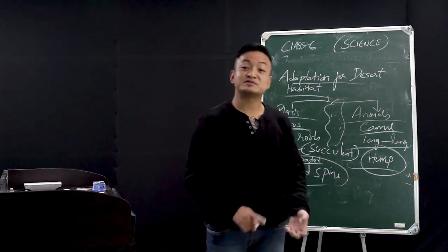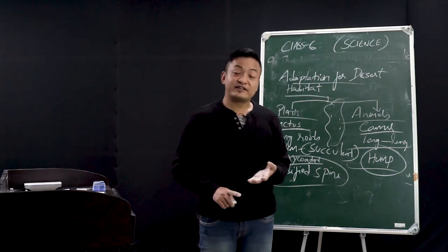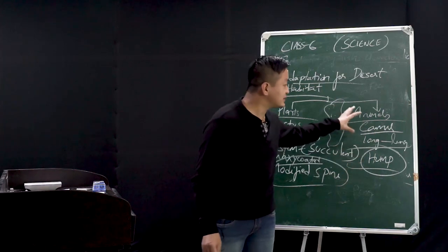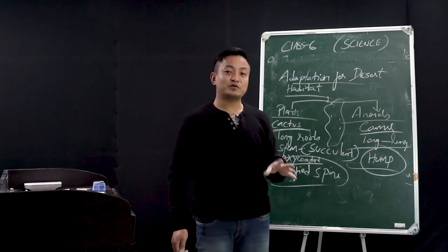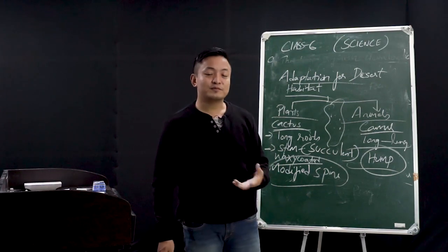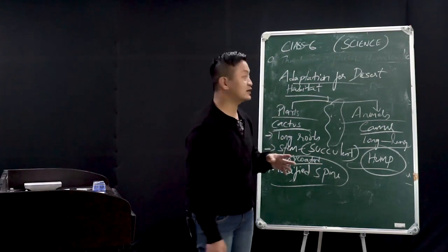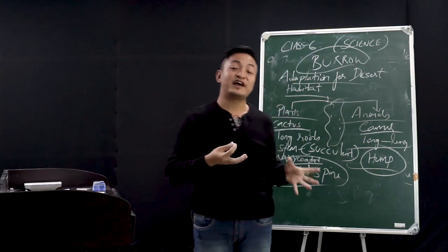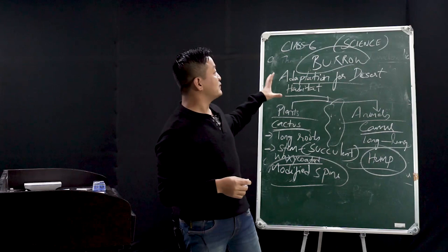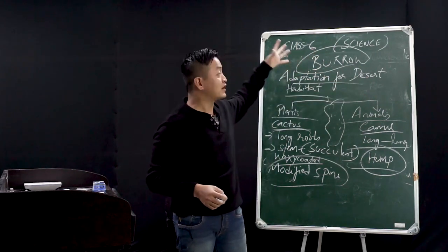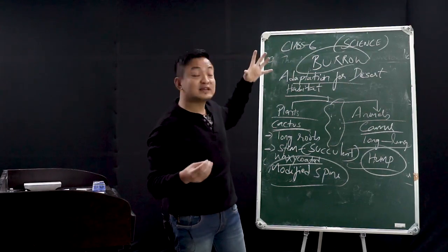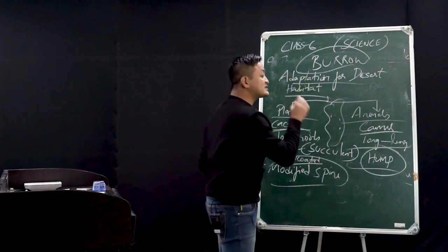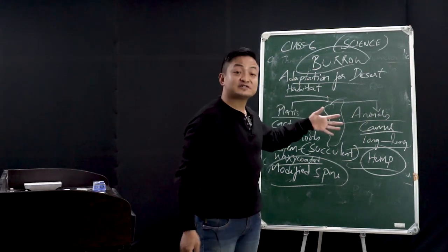Now let's talk about some rats and snakes in the desert. They are active only at night because during the day it is very hot. During the daytime, they stay inside a burrow — B-U-R-R-O-W — a type of hole they have made, to protect themselves from the heat. At nighttime they come out and are active.